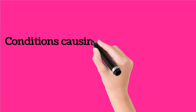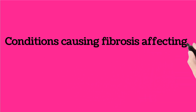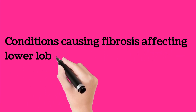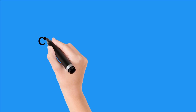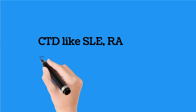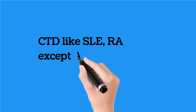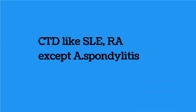Today we can discuss conditions causing fibrosis affecting the lower lobe of the lungs. There are a number of conditions. First, connective tissue diseases like SLE and rheumatoid arthritis, excluding ankylosing spondylitis.